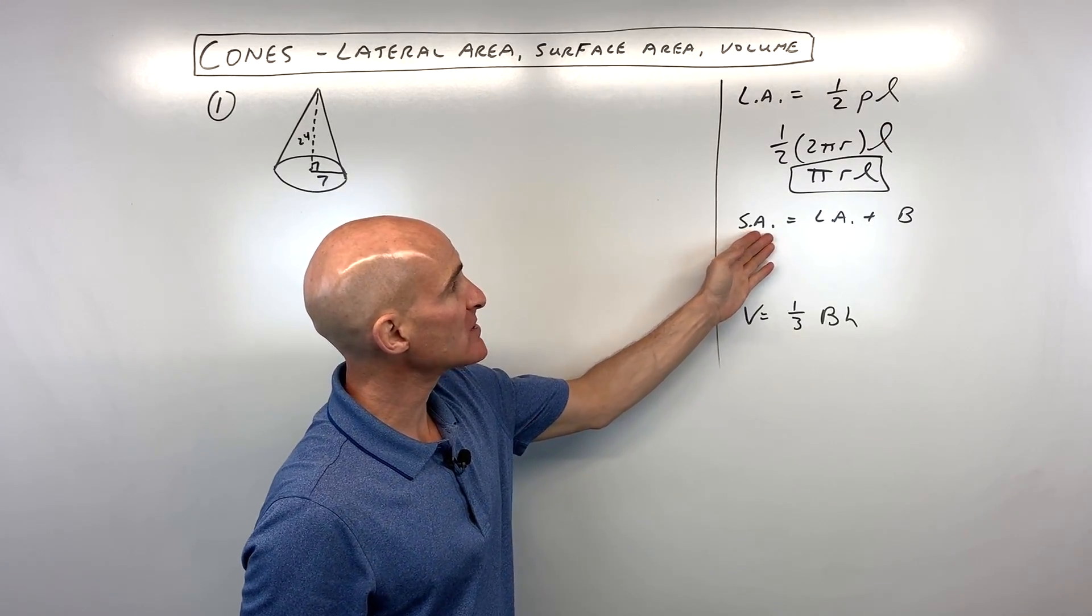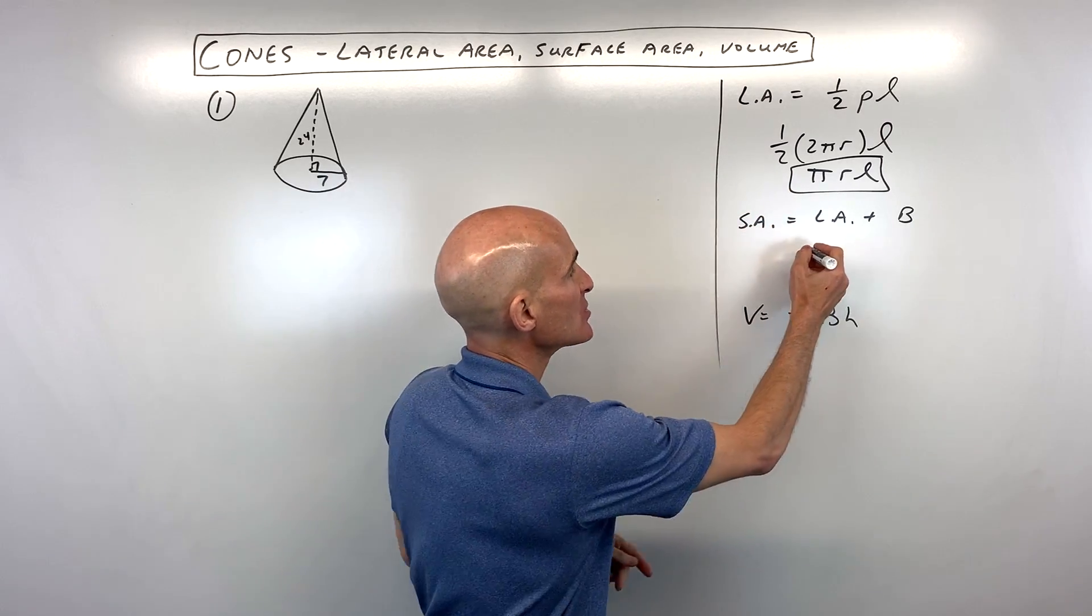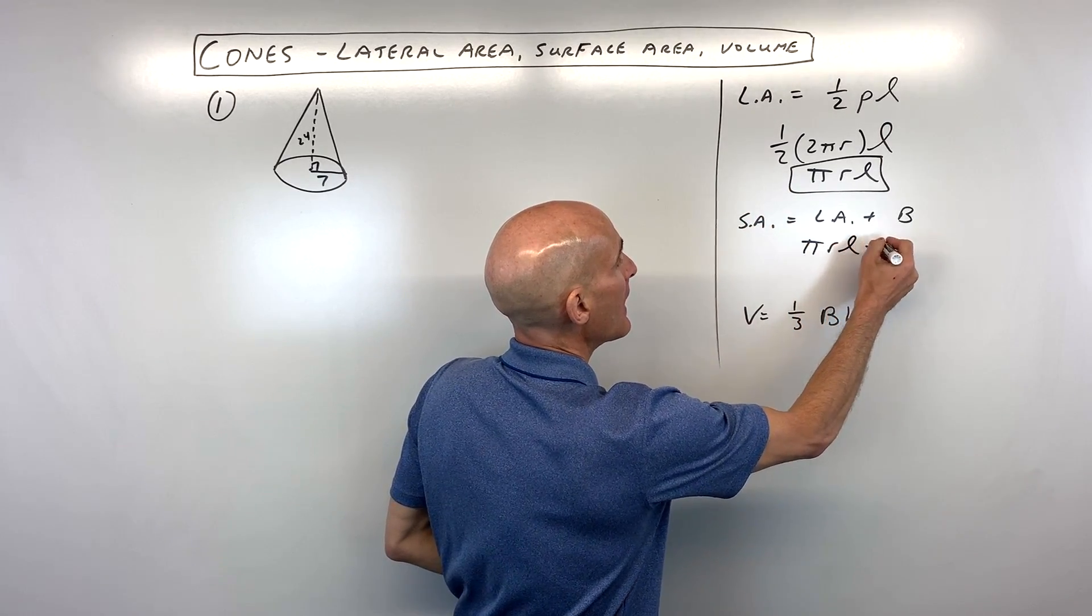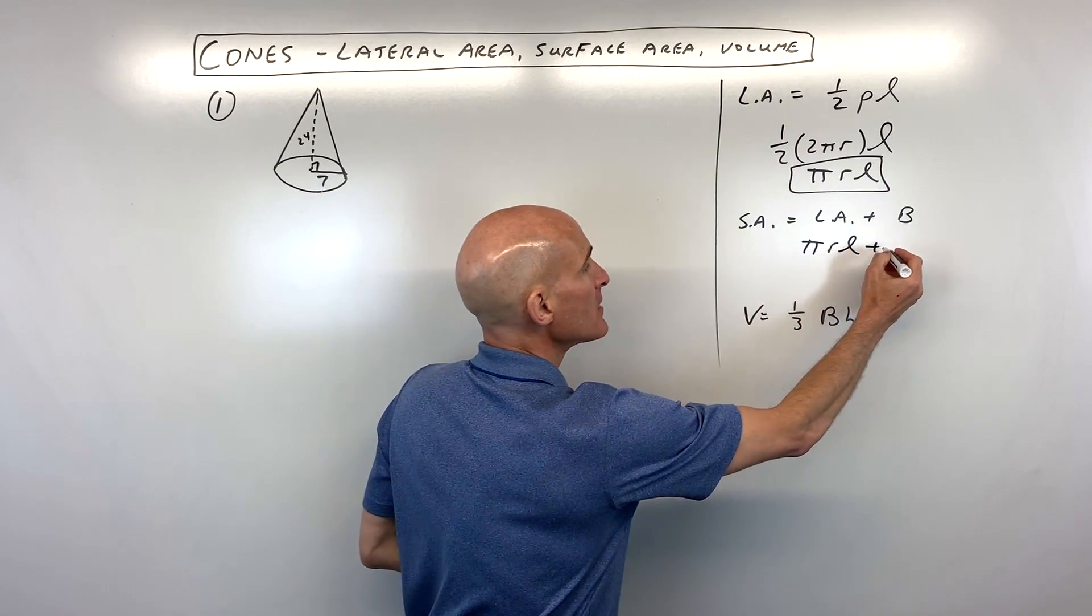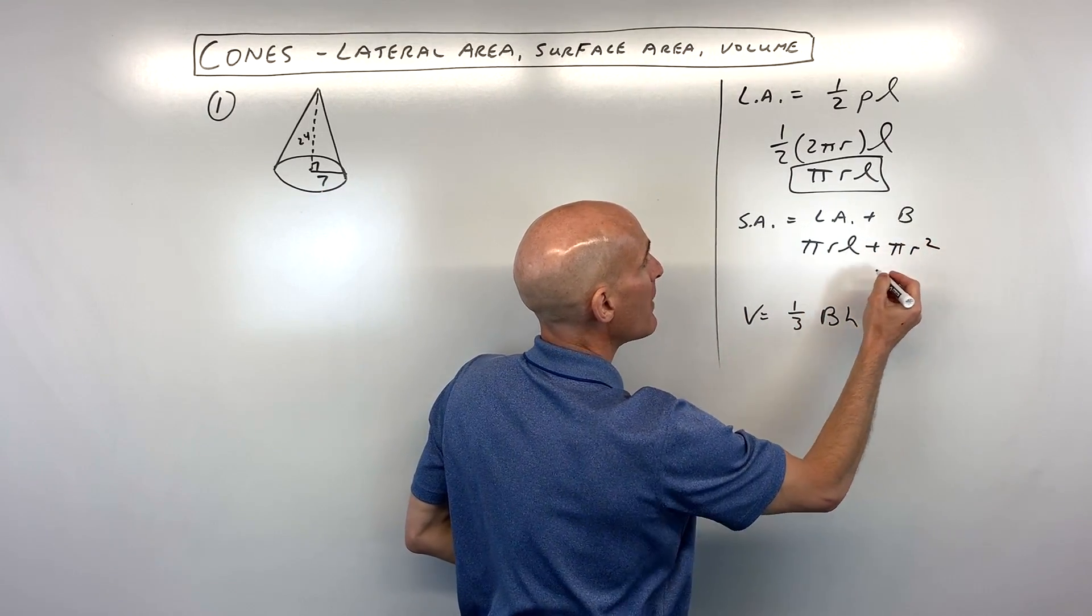If you want to find the surface area, you just take that lateral area, which we just found, πrl, and you add on the area of the base. Of course, the base in a cone is a circle, so we use the formula for area of a circle, πr².